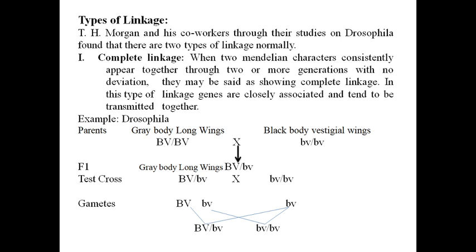Complete linkage means the genes are not separated during crossing over. When two Mendelian characters consistently appear together through two or more generations with no deviation, they are said to show complete linkage. In this type of linkage, genes are closely associated and tend to be transmitted together.